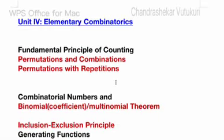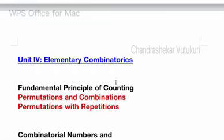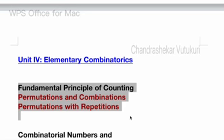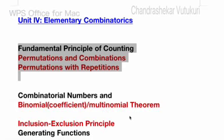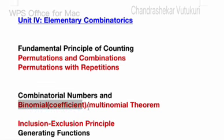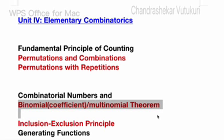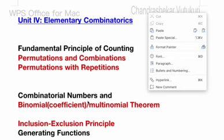Unit 4 is all about elementary combinatorics. Fundamental principles of counting, permutations and combinations, and permutations with repetitions are said to be the topmost questions which may occur in long and short — without skipping this part. Binomial coefficients are set as a topmost question, and the multinomial theorem — binomial and multinomial theorem — will occur this time for sure in your question paper under Unit 4. Average students can skip Unit 4.